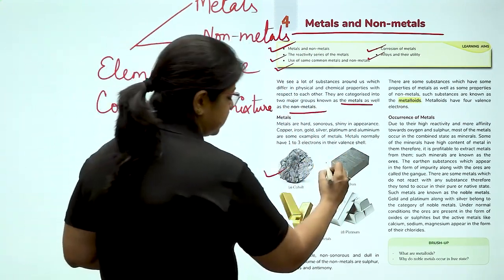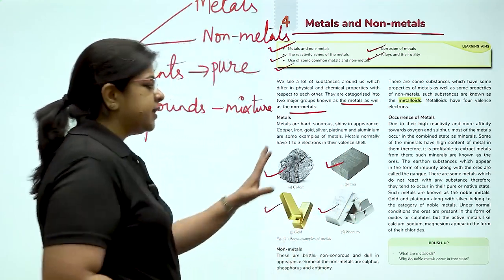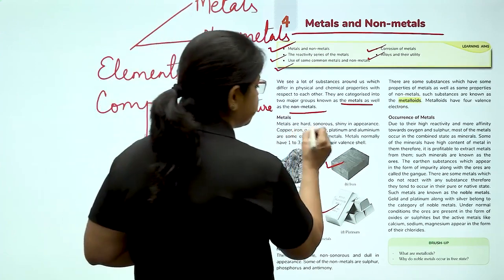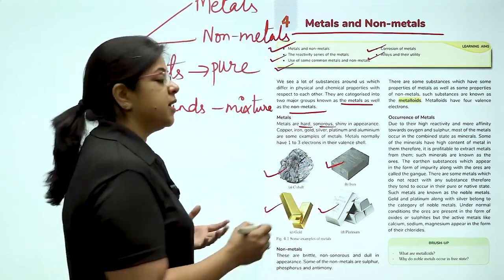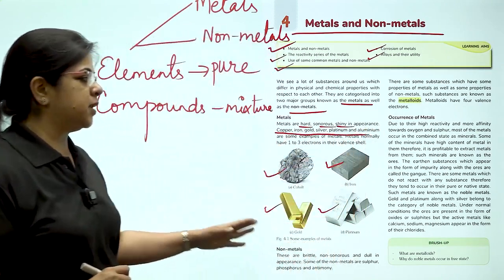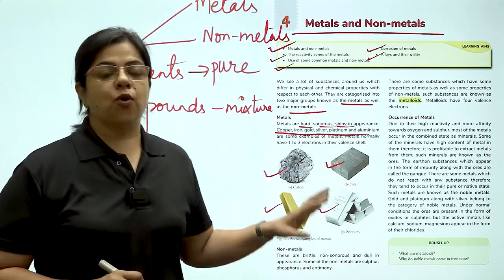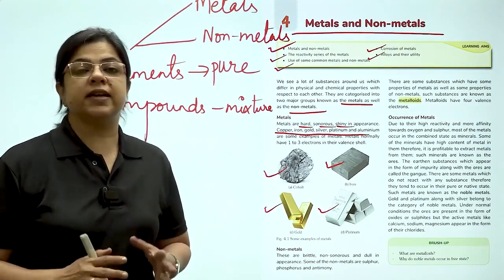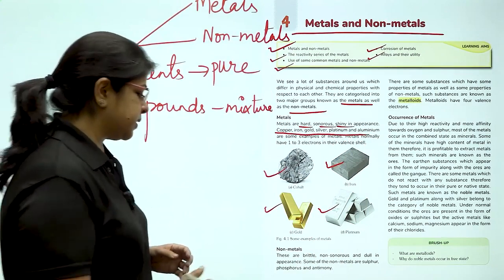Metals as we can see here, cobalt, iron, gold and platinum, these usually have a very hard texture. They are sonorous. They are shiny in appearance. Copper, iron, gold, silver, platinum and aluminum are examples of metals. Metals usually have 1 to 3 electrons in their outer shells.